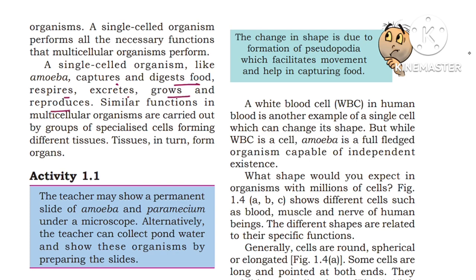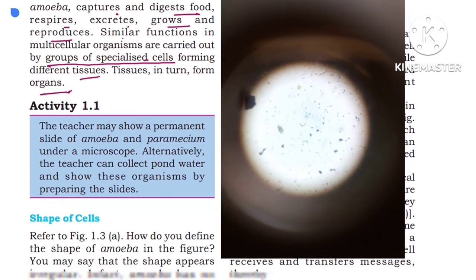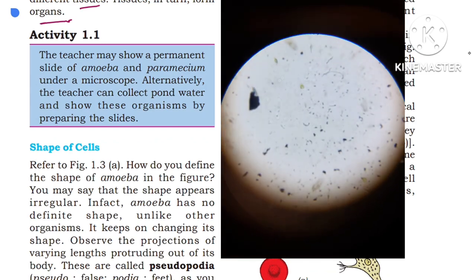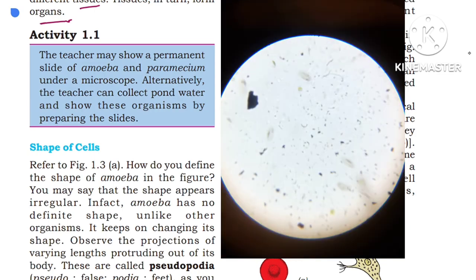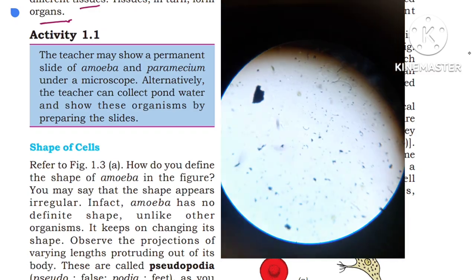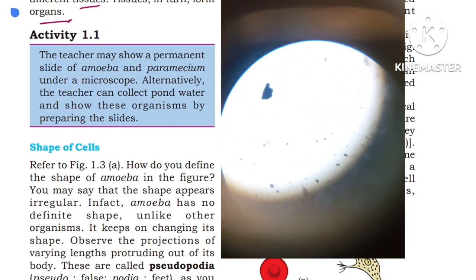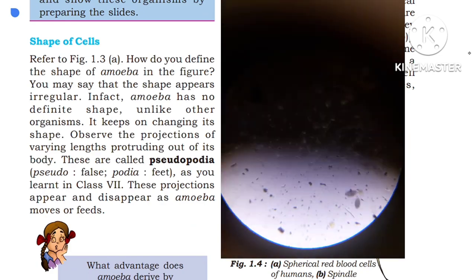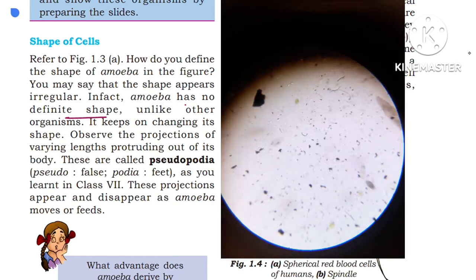In multicellular organisms, functions like digestion, respiration, circulation, and excretion are carried out by groups of specialized cells forming different tissues, and tissues in turn form organs. But amoeba is a single-celled organism — it can perform all basic functions within the single cell itself. To observe amoeba and paramecium, teachers can use a permanent slide under a microscope or collect pond water and prepare slides to observe these organisms. The shape of amoeba appears irregular; in fact, amoeba has no definite shape unlike other organisms.